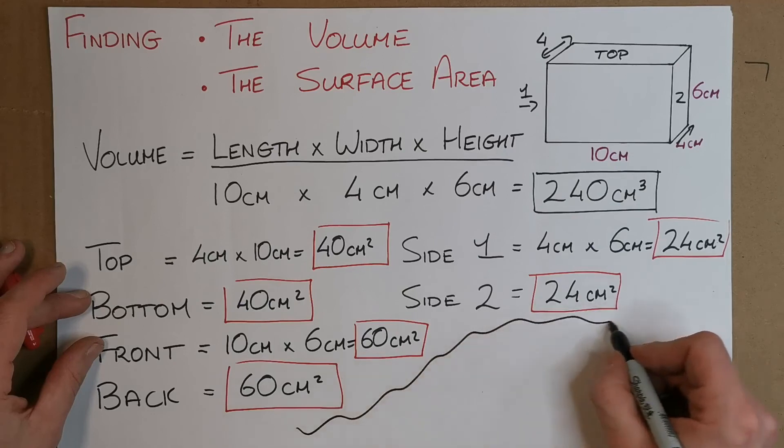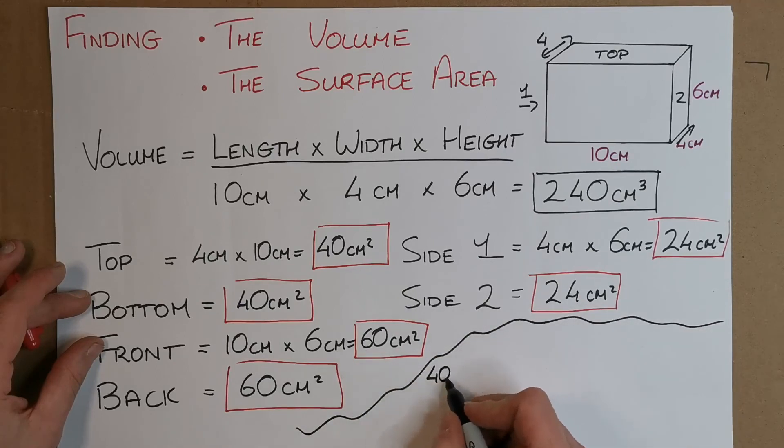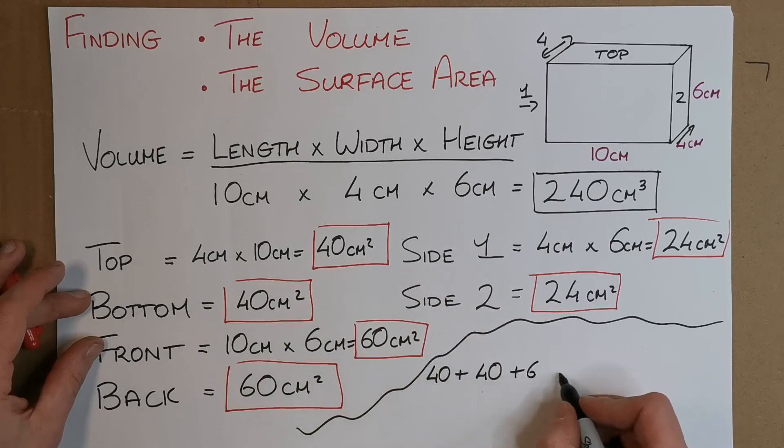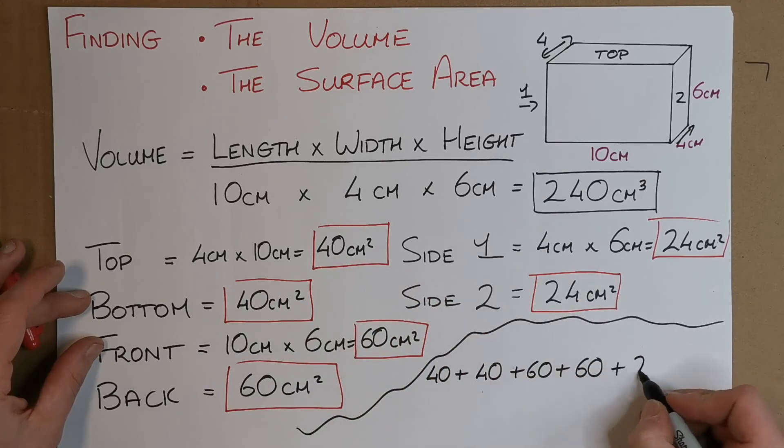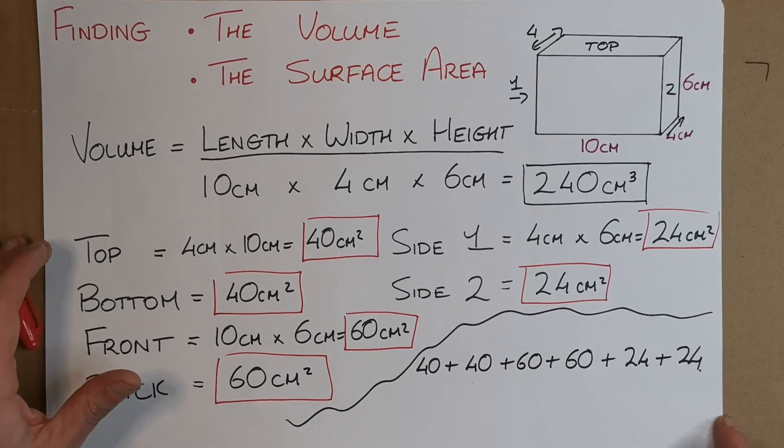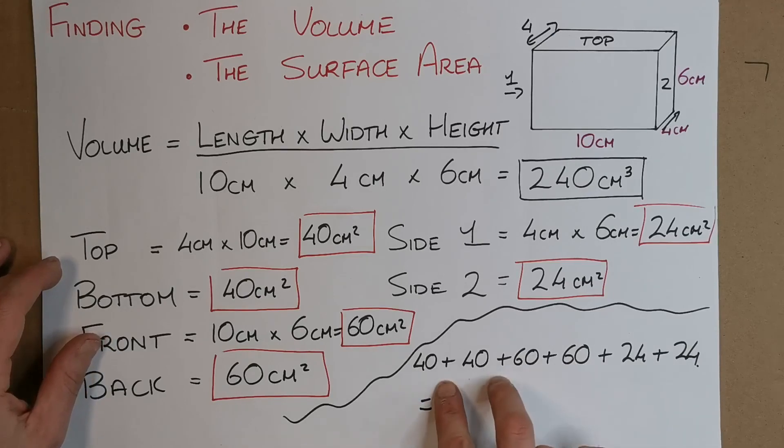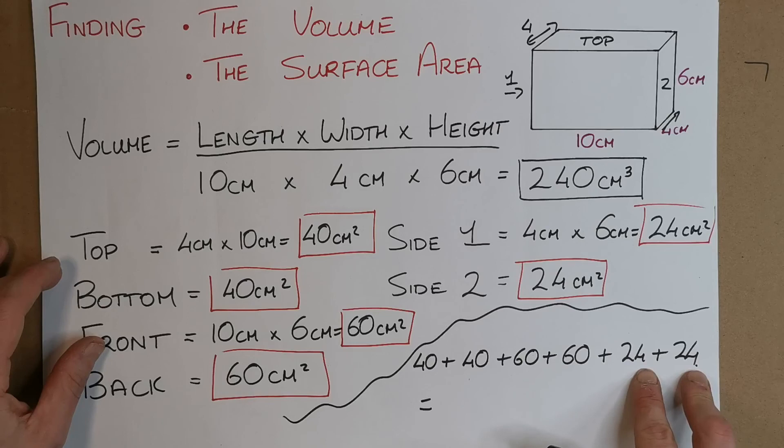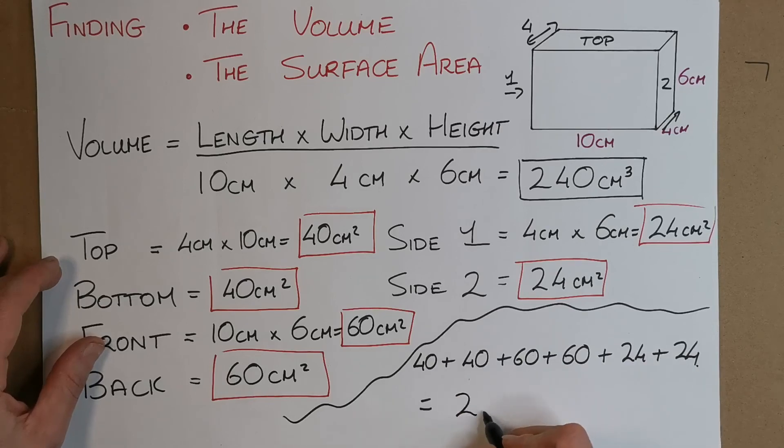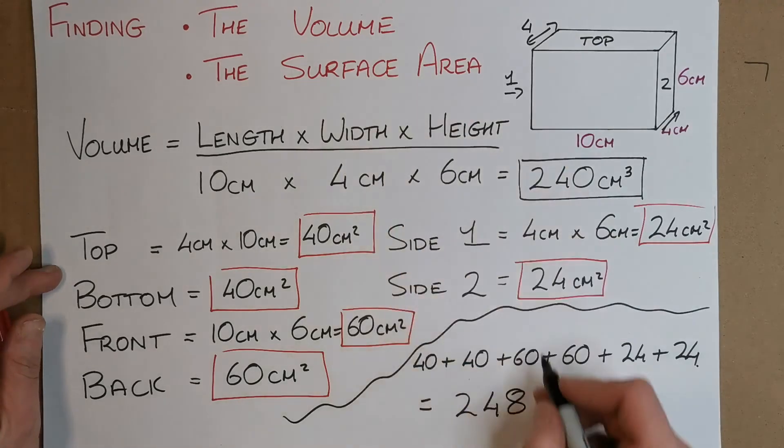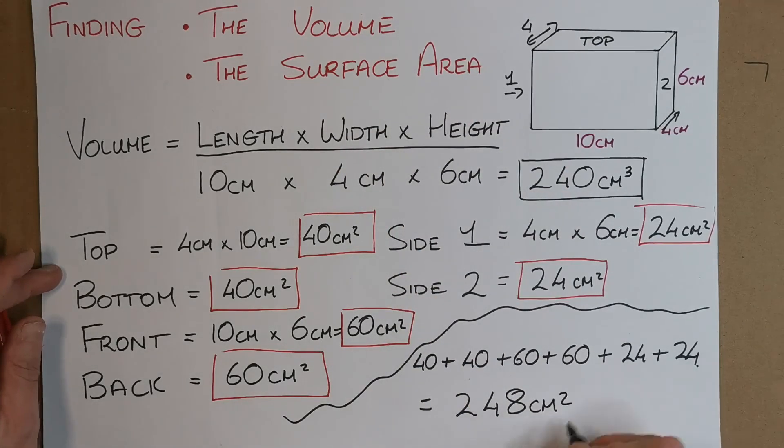So I have 40 plus 40 plus 60 plus 60 plus 24 plus 24. And when I add all those together, let's think about this. So that's 80, that's 120, that's 80 and 120 is 200. 24 and 24 is 48, so I end up with 248. And of course the unit, it's a surface area, it's centimeters squared.